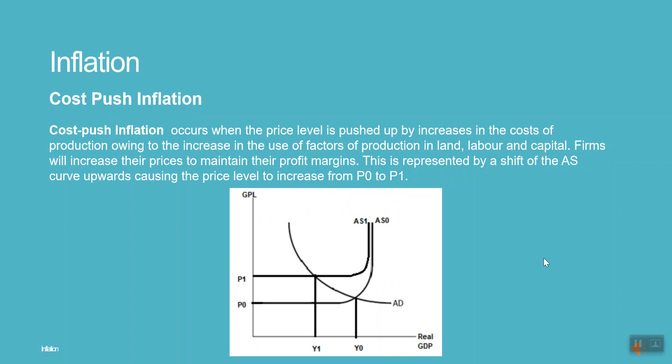Cost-push inflation occurs when the price level is pushed up by increases in the costs of production, owing to the increased use of factors of production in land, labour, and capital. Firms will increase their prices to maintain their profit margins. This is represented by a shift of the AS curve upwards, causing the price level to increase from P0 to P1.